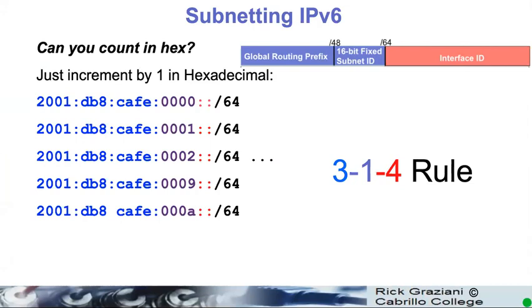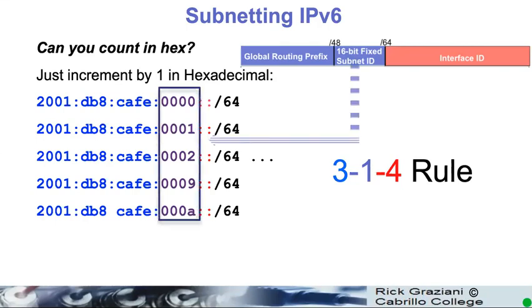Can you count in hex? 0, 1, 2, 3, 4, 5, 6, 7, 8, 9, A, B, C, D, E, F. Then you can subnet, because that's basically all there is to it.